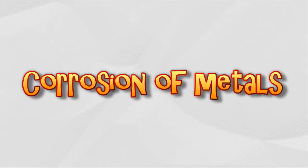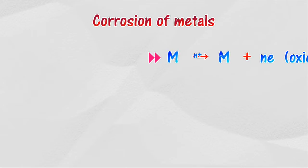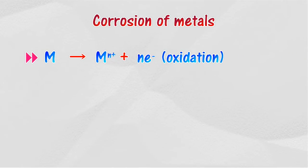Corrosion of metals is a redox reaction in which oxidation and reduction processes occur simultaneously. When a metal is exposed to air, it will be oxidized by oxygen and an oxide layer is formed on its surface.